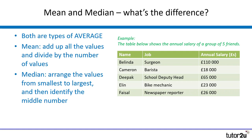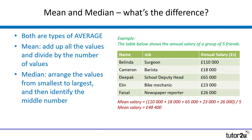An example is the best way to get to grips with the differences between those two approaches. The table shows us the annual salary of a group of five friends, and as you can see they all have quite different salaries, which is going to have a big impact on the outcome when we calculate the two types of average. To calculate the mean, we add up the annual salaries of our five friends and then divide by five, because we have five values.